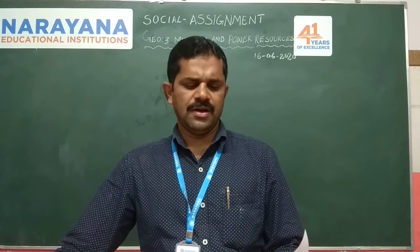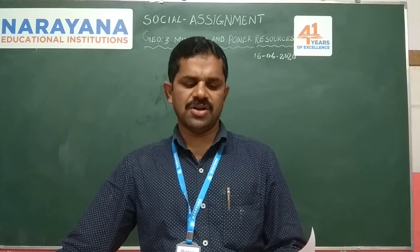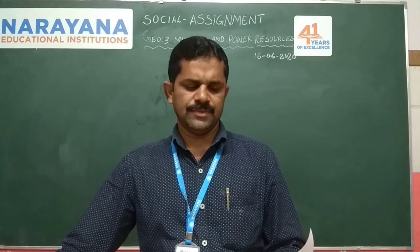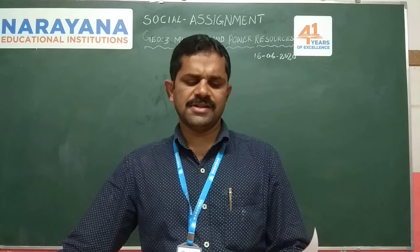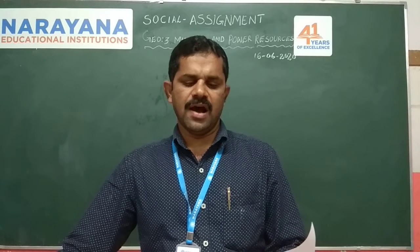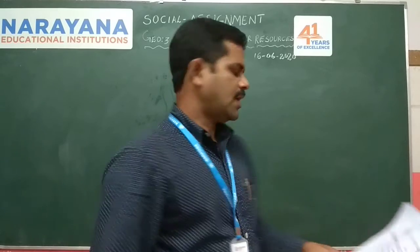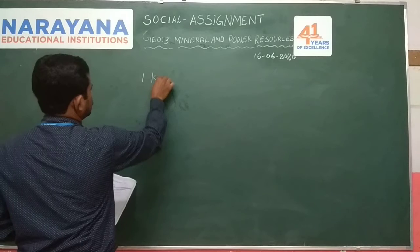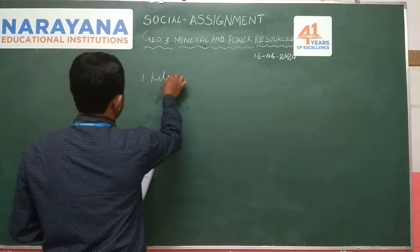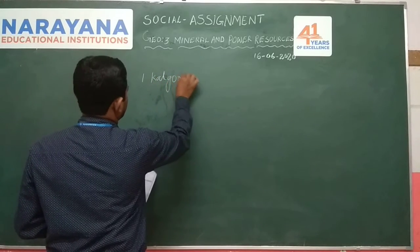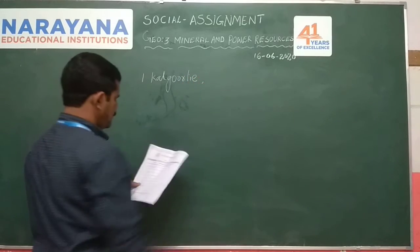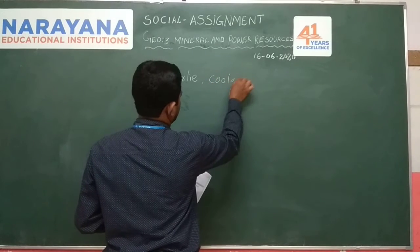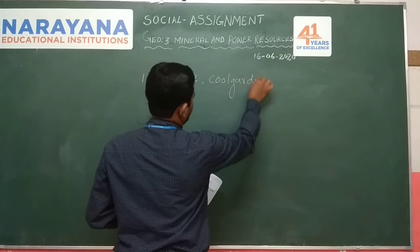Question No. 1: Name two areas in Australia which have large deposits of gold. Two areas in Australia which have large deposits of gold. The answer is Kalgoorlie and Coolgardie.